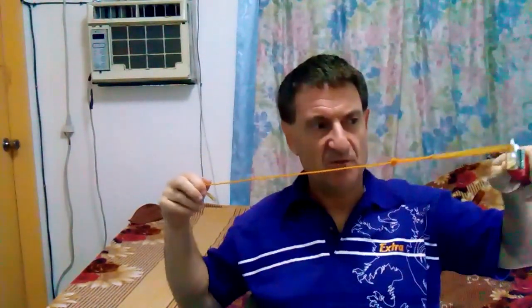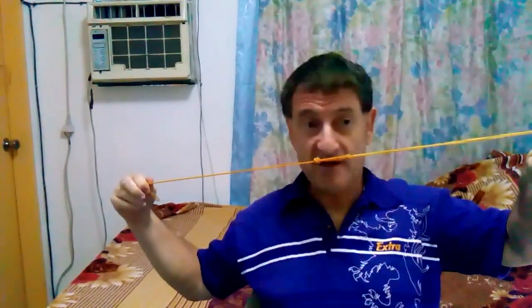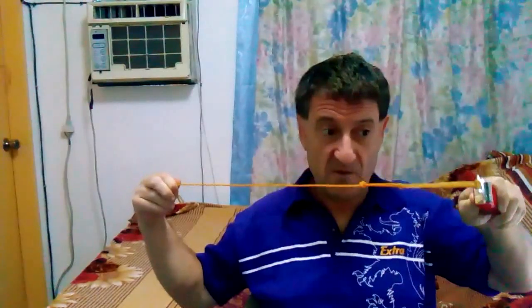It works like this: you pull back this little string sling, and you let it go and it flies forward. Boom, and it will kill the fly.